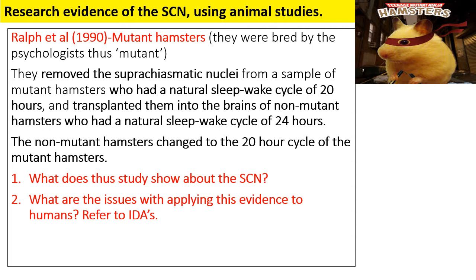What does this study show about the SCN? It again emphasises the role of the SCN in maintaining our circadian rhythms and sleep-wake cycle. In terms of applying it to human beings, can we truly extrapolate results found with animals to humans? Some might say yes, because we have similar genes and similar DNA, and we're able to circumnavigate ethical issues you would find in humans. Would it be possible to do this study in human beings? Probably not - and does this raise ethical issues? Absolutely.